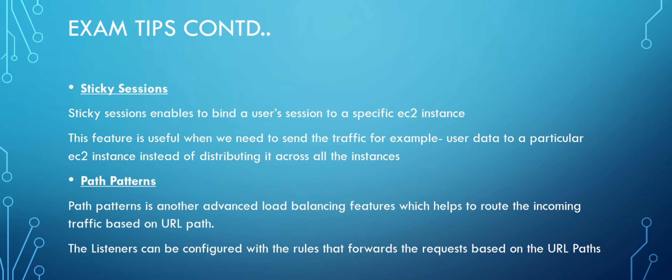For path patterns: they are listener rules that can be configured to distribute traffic based on URL paths. For example, cloudwithmosin.com/products will go to one specific fleet of EC2 instances, and cloudwithmosin.com/services will be served by another set of EC2 instances. It follows URL paths and distributes traffic accordingly.